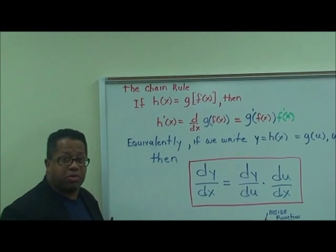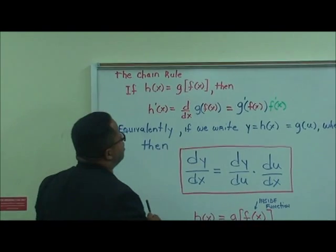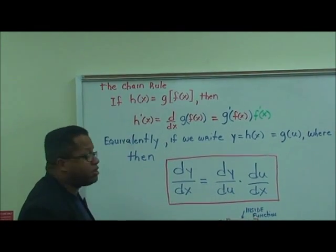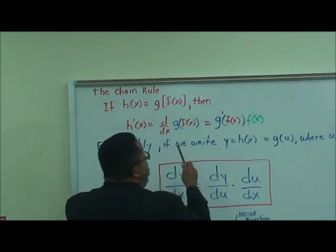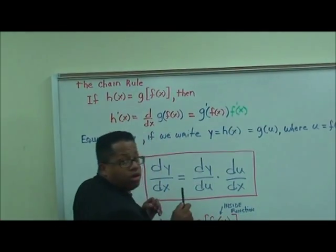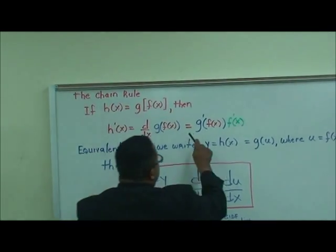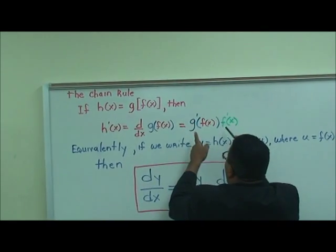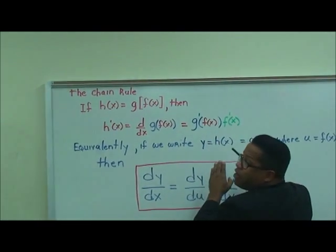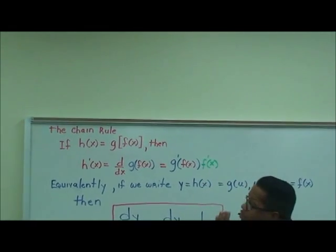The chain rule: if h of x is equal to g of f of x, then h prime of x — which is the derivative of h with respect to x — we're taking the derivative of this composite function, two separate functions which are composite of one another, with f of x being inside of g of x.